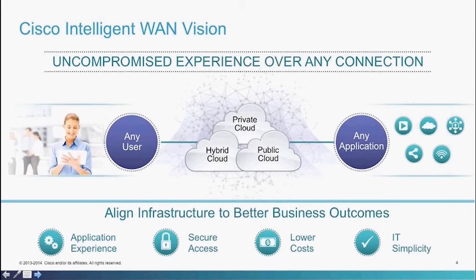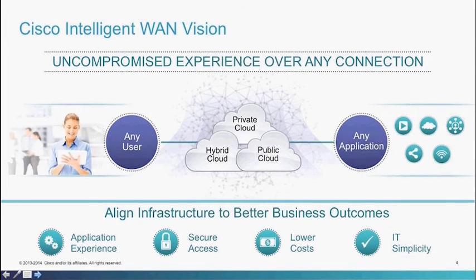Cisco's vision is to develop an uncompromised experience over any connection used in your WAN. Any user will have the ability to access any application wherever it resides. The goal is to align your infrastructure spend with business outcomes — so that application experience improves, you get much better security across your WAN, while at the same time reducing costs and greatly improving IT simplicity.